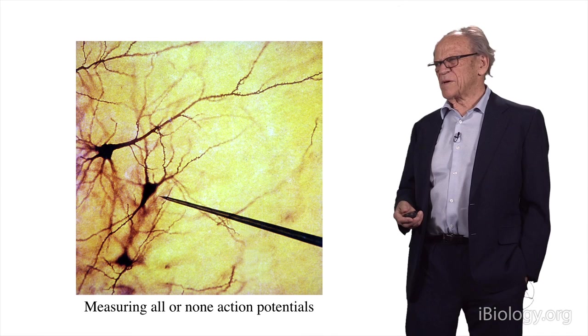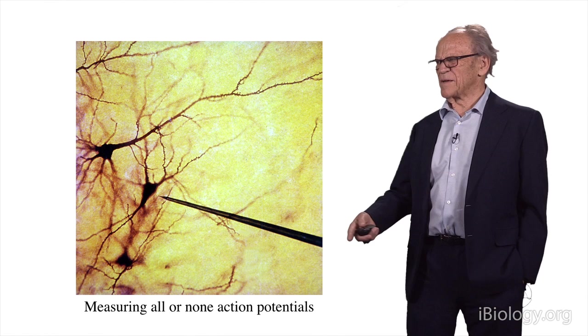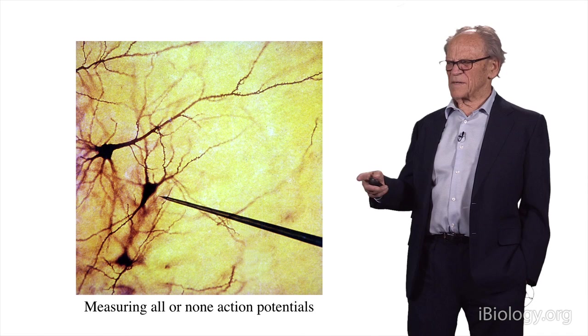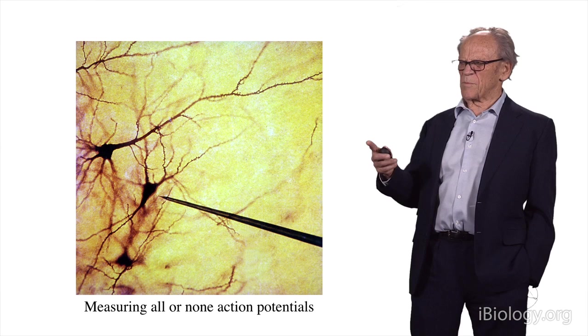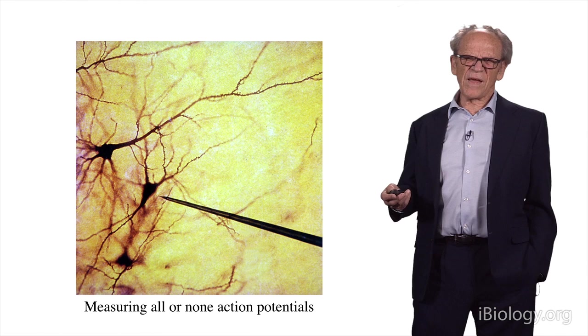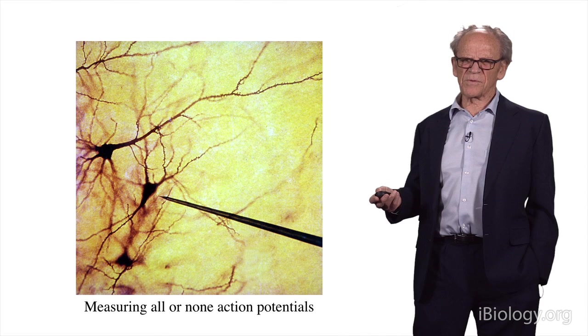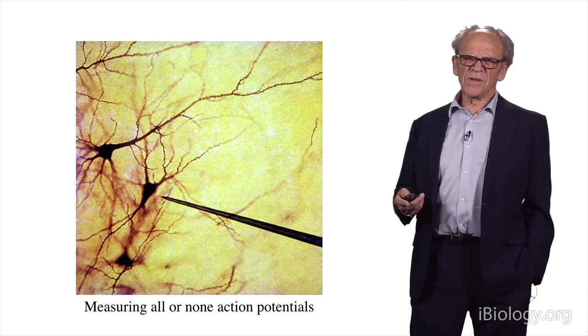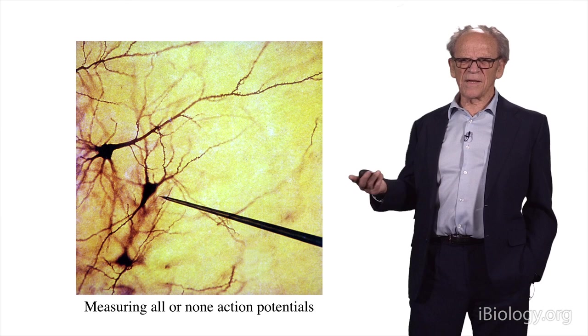This is a picture of the microelectrode. You can see the thing coming in from the right, coming close to a nerve cell. The nerve cell is stained here with a silver stain to show the cell body and the processes. When you put the electrode close to the cell body, you can record the all-or-none action potentials that nerve cells use to communicate with each other.